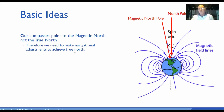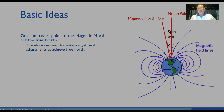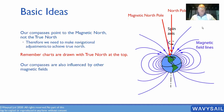We need to make adjustments between where our compass is pointing and where true north is on our charts. Our compasses are also influenced by other magnetic fields — if you put a magnet next to a compass it's going to influence it. On-board magnetic fields and moving magnets all influence our compasses.